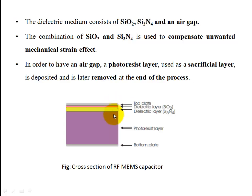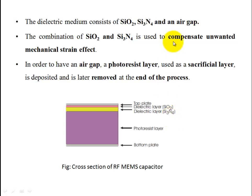When direct media such as silicon nitride and silicon dioxide are used, along with one air gap, this combination of silicon dioxide and silicon nitride is used to nullify the mechanical strain effect.